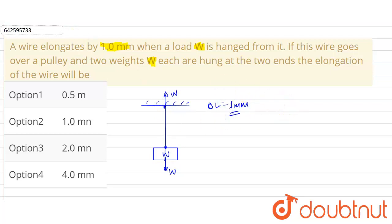Now in the second case, what we have been told is that the wire goes over the pulley. So let us suppose this is our pulley and wire goes over like this, and both ends of the wire are hung from the same weight of W. This is the second case.